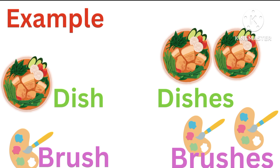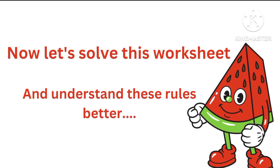Let's look at the next example. Dish becomes dishes, and brush becomes brushes. Because dish ends in SH, when we make it plural we add ES. The same rule applies to brush, which becomes brushes.